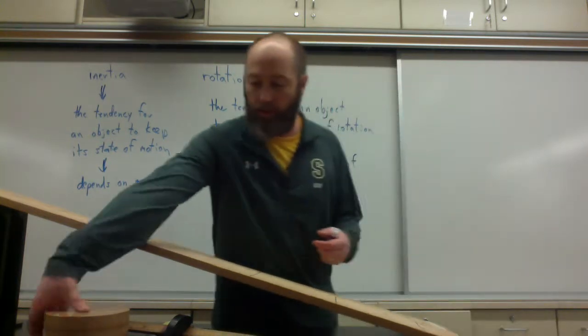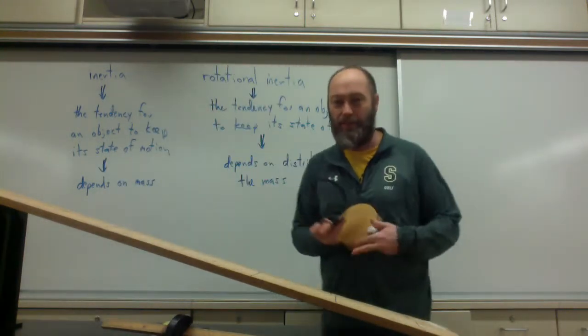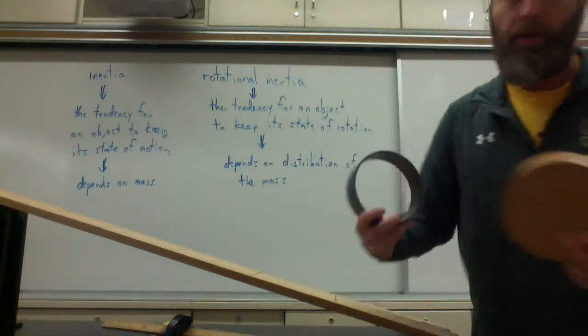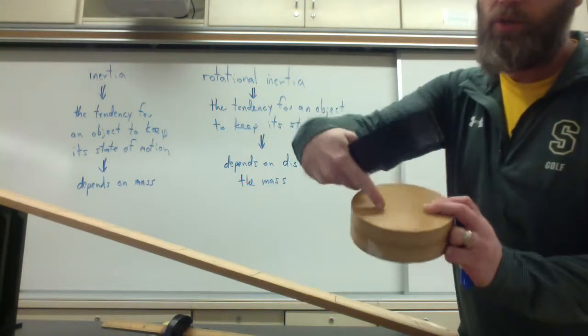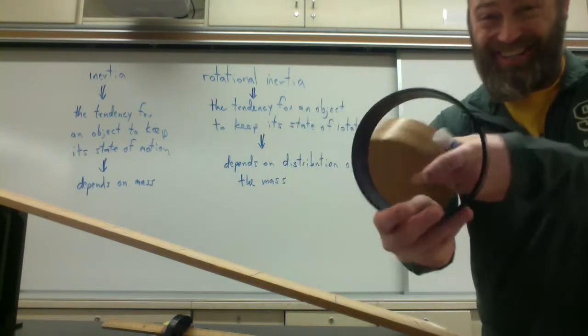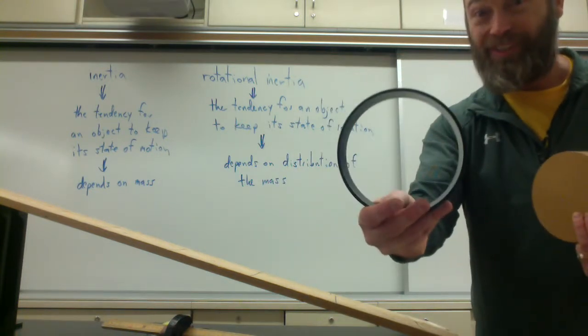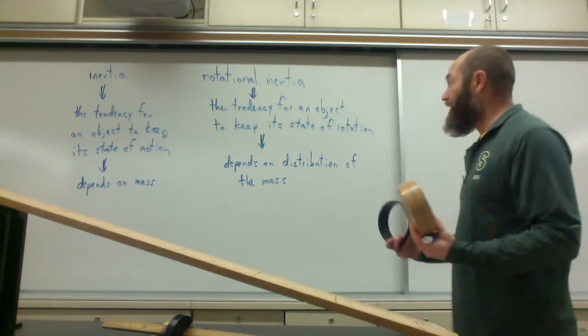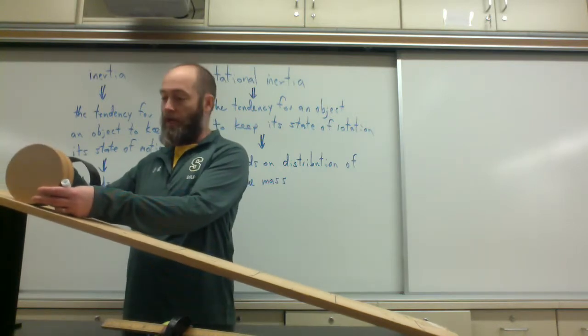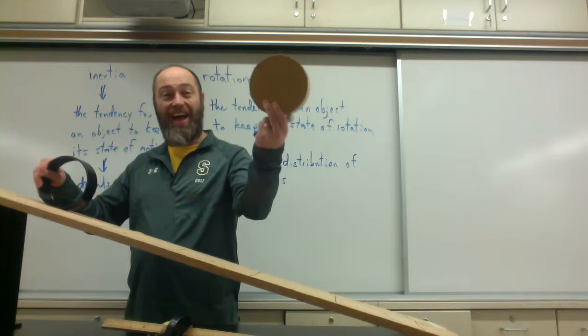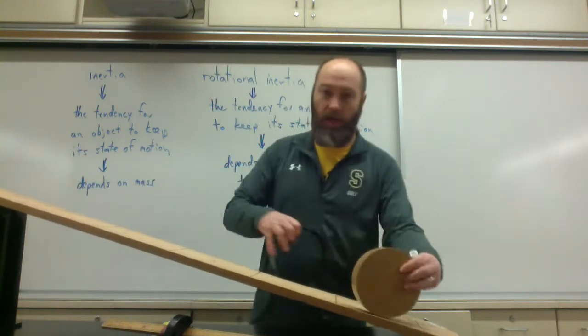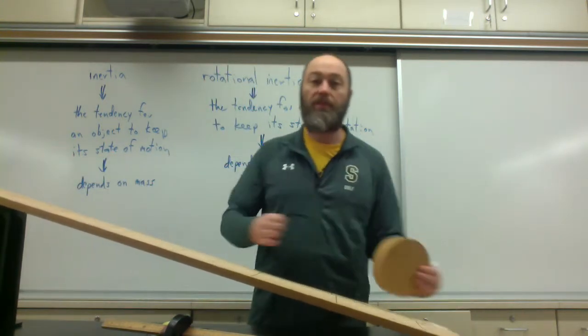If you have something like this or this, disc versus hoop. Disc has more mass close to the axis of rotation, less rotational inertia. All the mass here is a distance R from the axis of rotation, more rotational inertia. So guess what? If you were to have these two race, this one will always win. Why? Because it's easier to start it rotating. And you can see, it will win. Hooray!